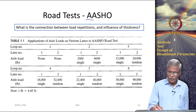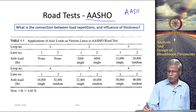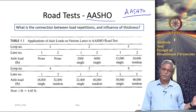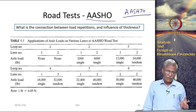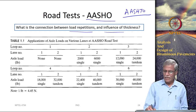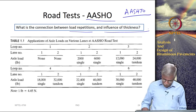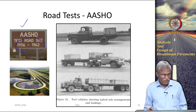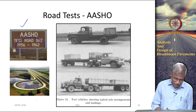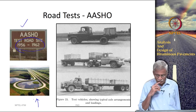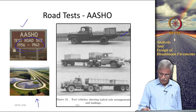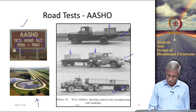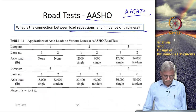The most important road test is now called AASHTO - American Association of State Highway and Transportation Officials; the 'transport' was added later. This was carried out from 1956 to 1962. The main emphasis was the connection between load repetition and the influence of thickness. Different loops were constructed. You can see in pictures the test track with vehicle type 1, vehicle type 2, and vehicle type 3, loaded directly on top of the axles.